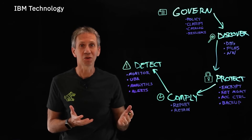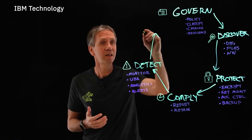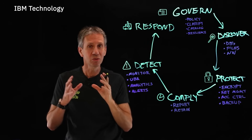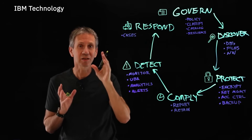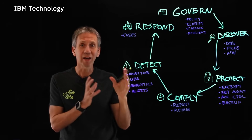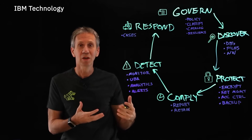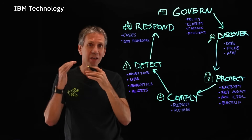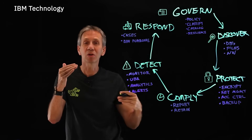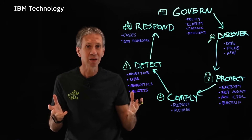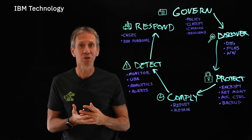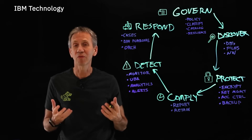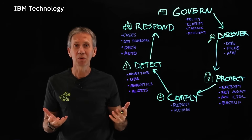Once we have a detected violation, I need to be able to respond. I need an ability to create cases, assign those to individuals to go do investigations, attach information to them, and track them through to completion. Dynamic playbooks allow us to guide the analyst through what the steps should be — what the outcome was at each step determines what you do next. We do orchestration for the first-of-a-kind situations we've never seen before, and automate as much as we can of the other responses.